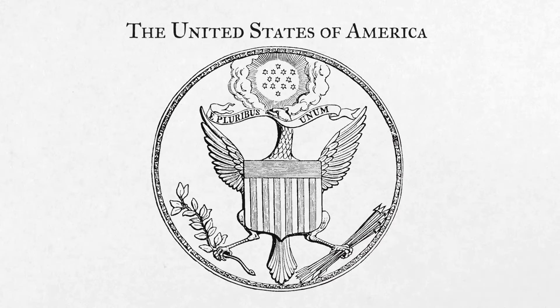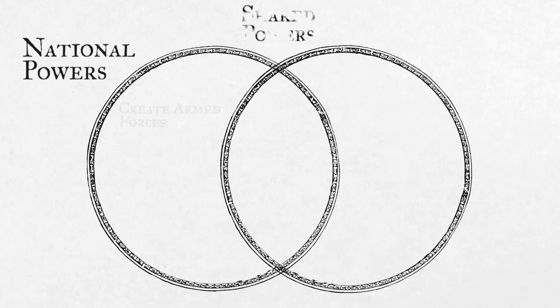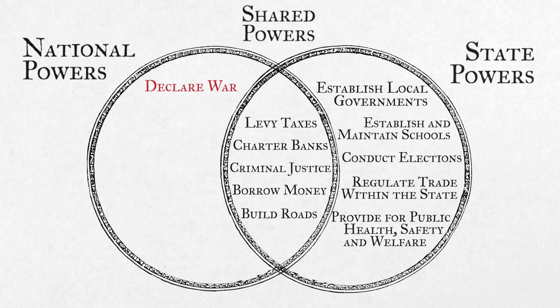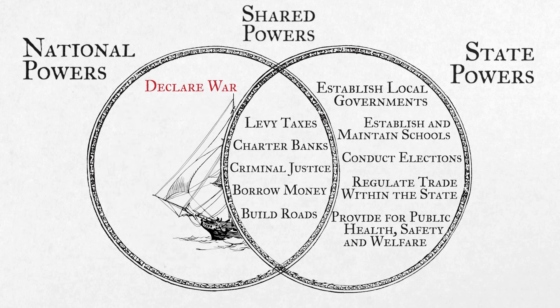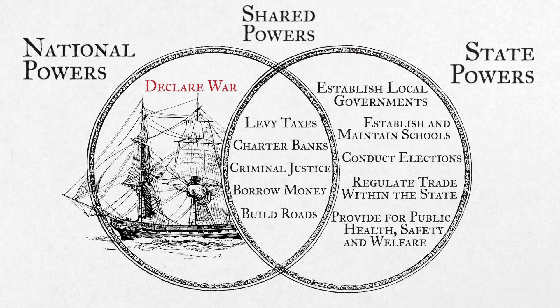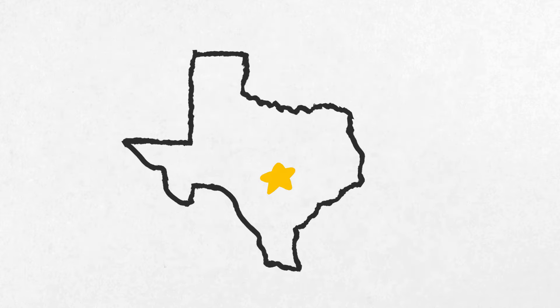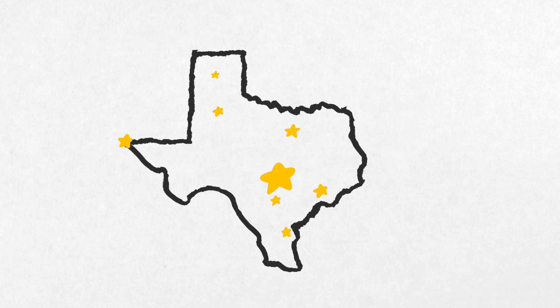The United States has a federal system of government. That means that some powers are held at the national level — like, for example, the power to declare war — and all other powers are held at the state level. States then delegate some powers and responsibilities to local governments, so that makes a total of three levels of government altogether: federal, state, and local.